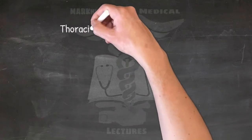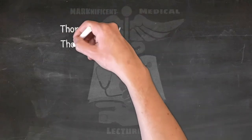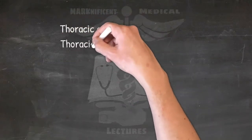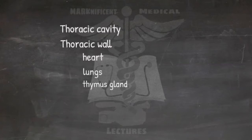The human thorax includes the thoracic cavity and the thoracic wall. It contains organs including the heart, lungs, and thymus gland, as well as muscles and various other internal structures.